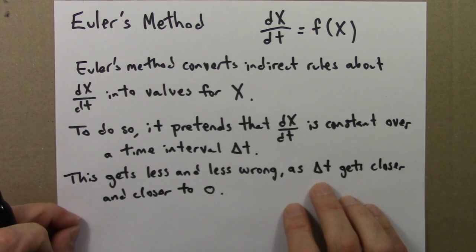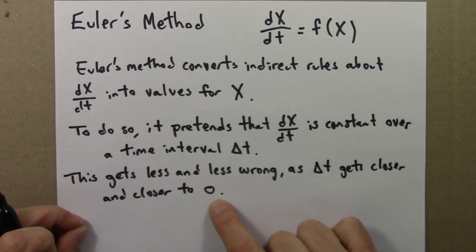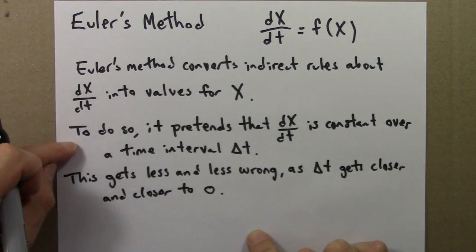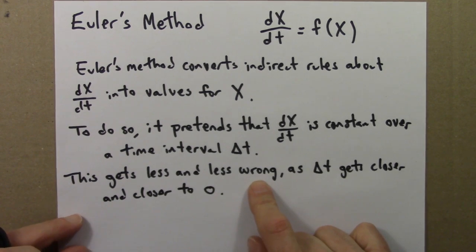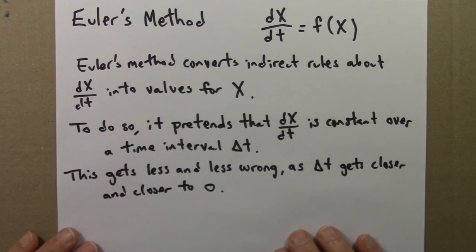So as delta t, our time interval over which we're pretending the rate isn't changing, as delta t gets closer and closer to zero, this Euler pretending will get less and less wrong. And in this way, Euler's method, a solution obtained from Euler's method, will get closer and closer to the true answer.